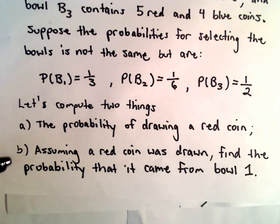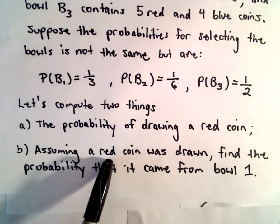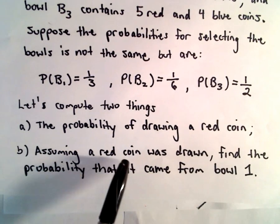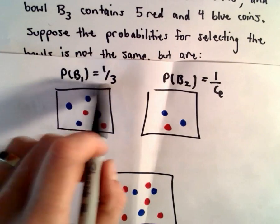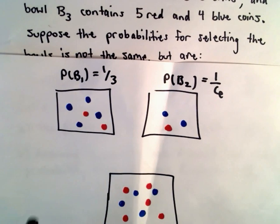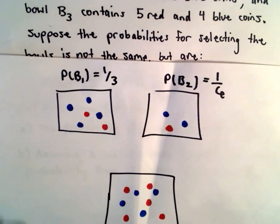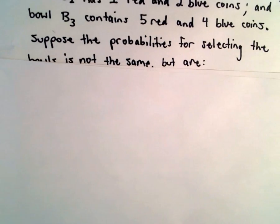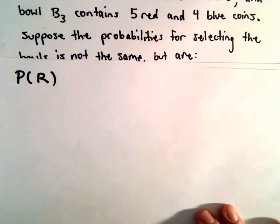Suppose you come there a little bit later — this is part B. Suppose you come there after the coin has already been drawn, and somebody has a red coin in their hand. We want to find the probability that, given that they have drawn a red coin, it actually came from the first bowl. We can't simply say that's one-third — that's the initial probability of selecting that bowl. Now we've got new information: in part B, we know that a red coin has been drawn, and we want to figure out the probability it came from the first bowl.